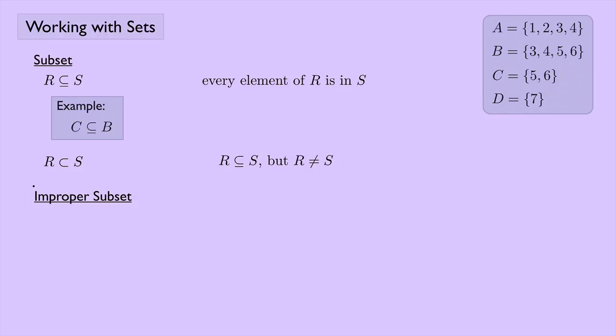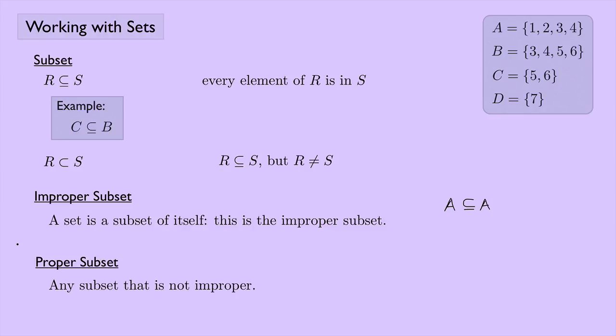An improper subset: a set is a subset of itself. That's the improper subset. In other words for the sets A, B, C, and D, I can say that A is a subset of A. If we have an improper subset we also have a proper subset, and a proper subset is any subset that is not improper.